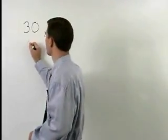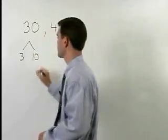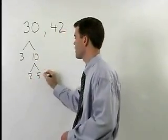Thirty is just 3 times 10, and 10 is 2 times 5.